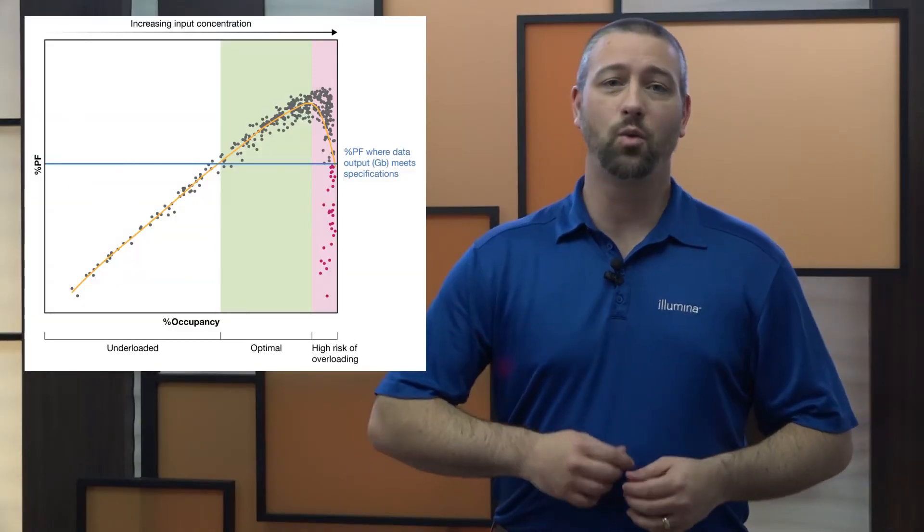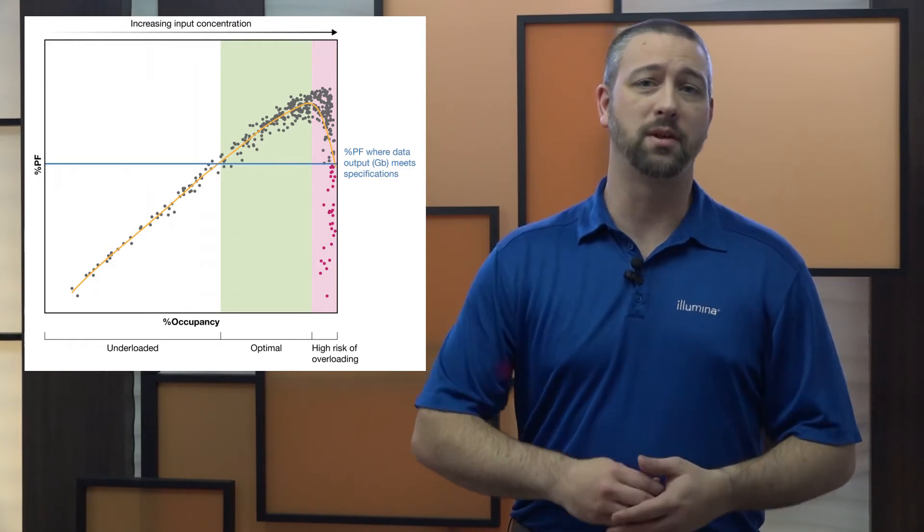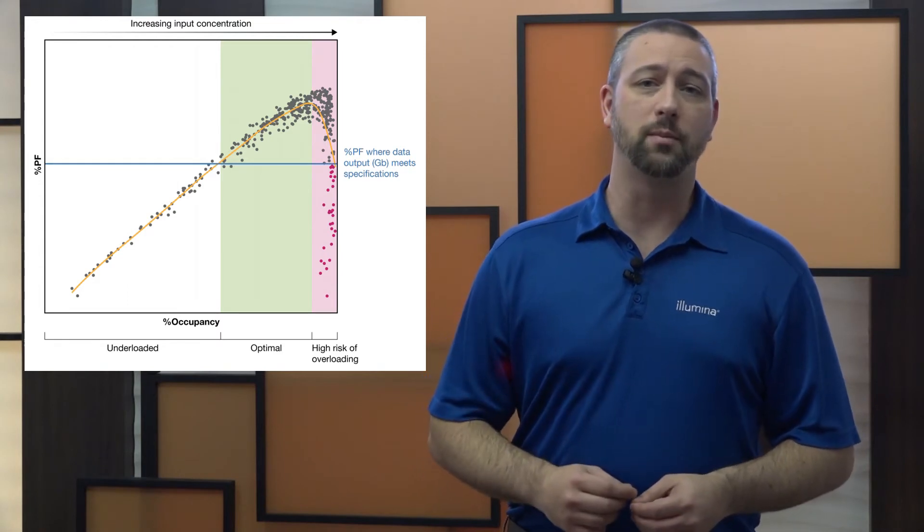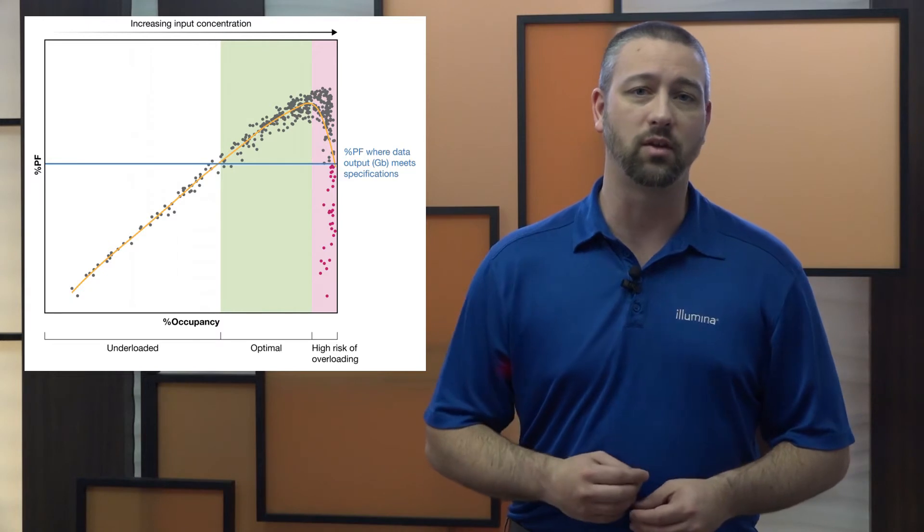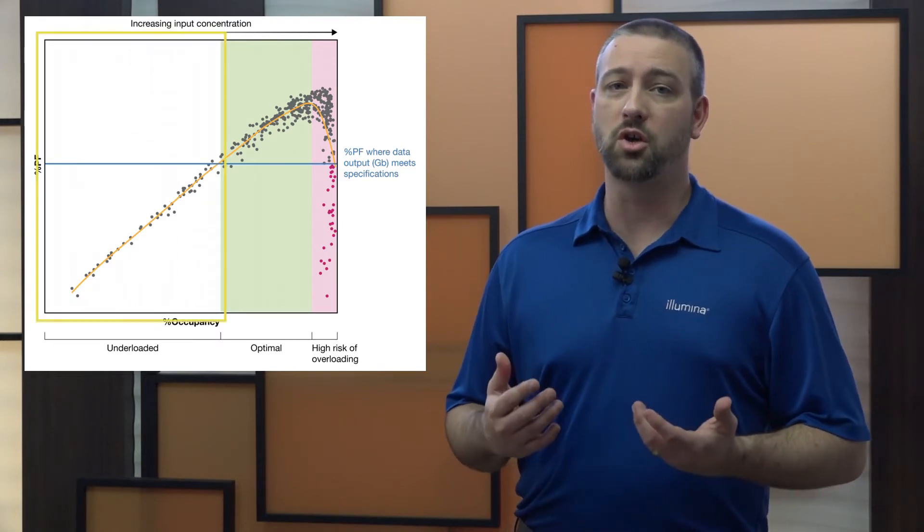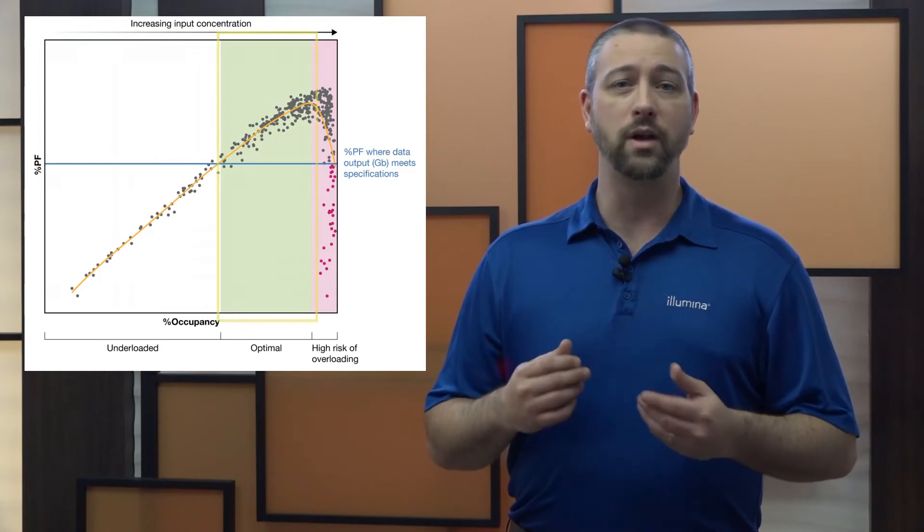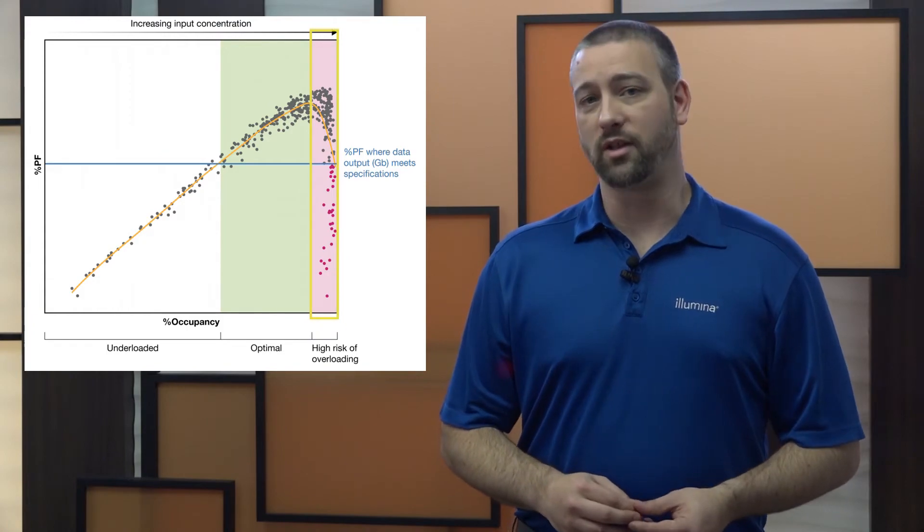This next plot is an excellent way to visualize the relationship between percent PF and percent occupancy metrics. For this plot of example data, each individual data point records the overall percent occupancy compared to the percent PF from a single sequencing run. The white region shows how the metrics perform when the instrument is under loaded. The green region is where the instrument is loaded optimally, and the red region shows overloaded flow cells.